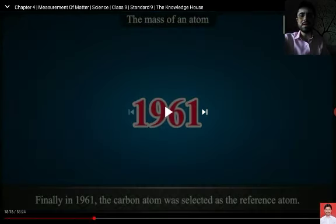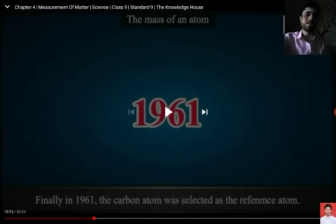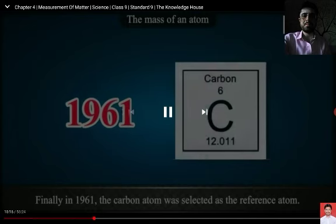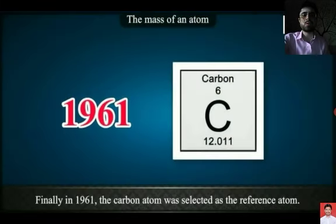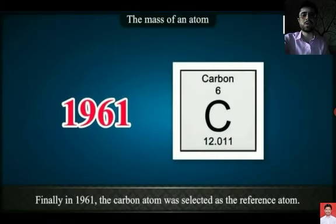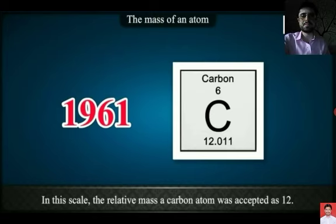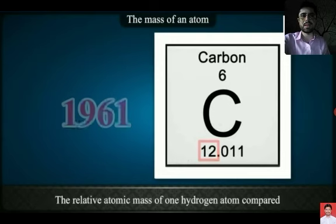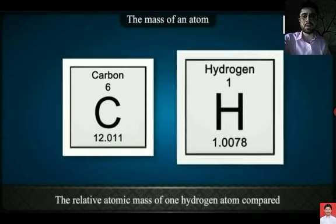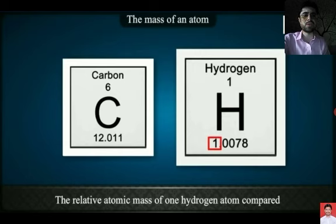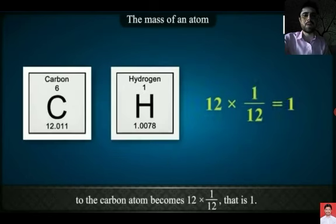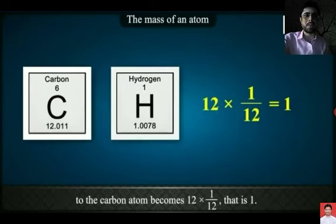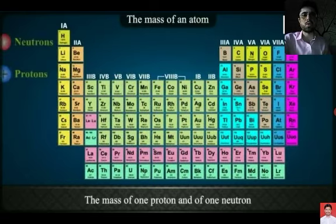Finally, in 1961, the carbon atom was selected as the reference atom and its mass was considered to be 12.011, which is approximately equal to 12. The relative atomic mass of one hydrogen atom was compared with carbon, and the mass of a carbon atom was calculated to be 12.